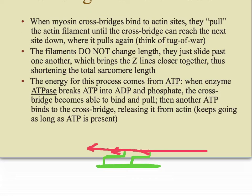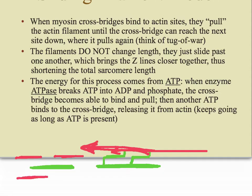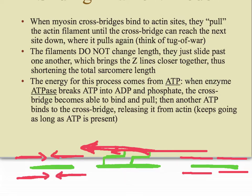The myosin grabs onto the actin and pulls it inward. What that ends up doing is causing overlap of myosin and actin — where before there was empty space between actin filaments. In contraction, the myosin pulls those actin filaments so there's virtually no space between them, and the entire sarcomere gets shorter because the actins are pulled inward toward one another, contracting the entire muscle.